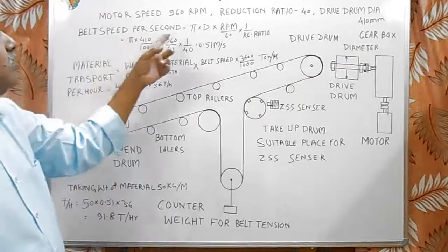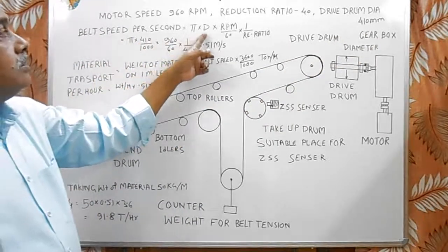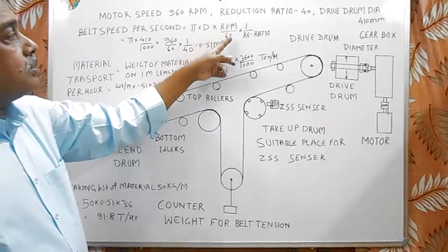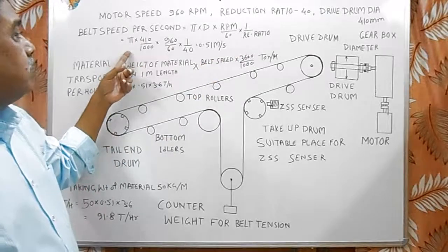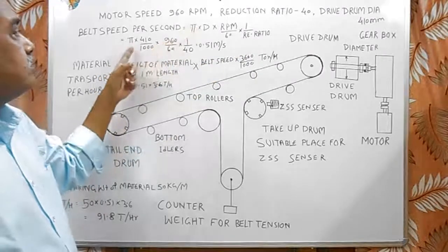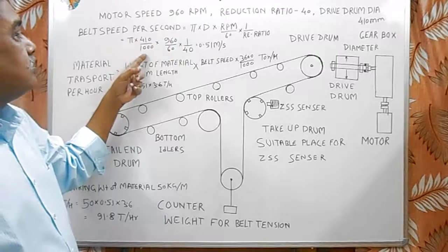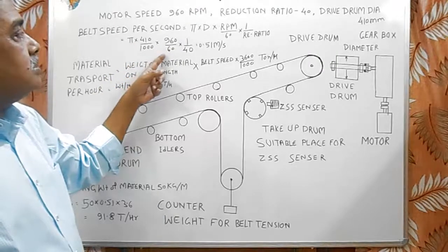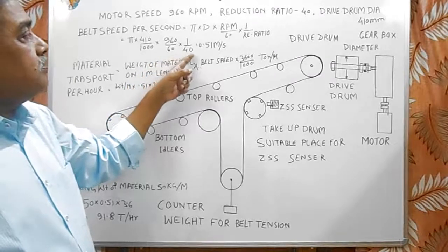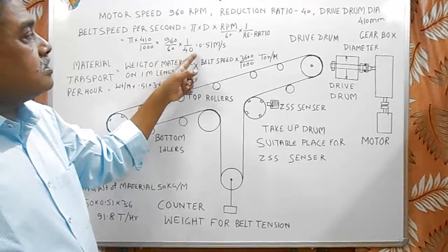The belt speed per second is equal to pi into d into rpm of motor upon 60 into 1 by reduction ratio. That is equal to pi into here drum diameter is 410, 410 by 1000 to convert it in meters. Multiply 960 by 60 speed in rps into 1 by 40. This is reduction ratio.